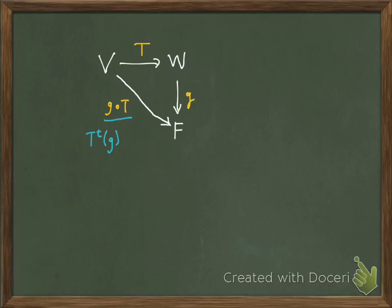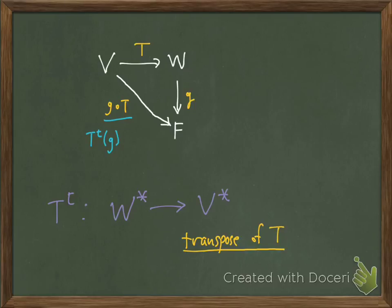Now, this is called T transpose of G. And so T transpose, interpreted in this way, can be seen as the following. For any linear functional on W, so an element of W star, it's going to output a functional on V. So that's an element of V star. So T transpose is going to give you a map from the dual space of W to the dual space of V. And this is called the transpose of T.